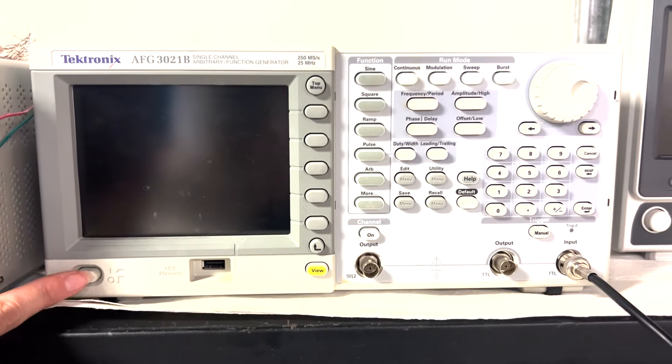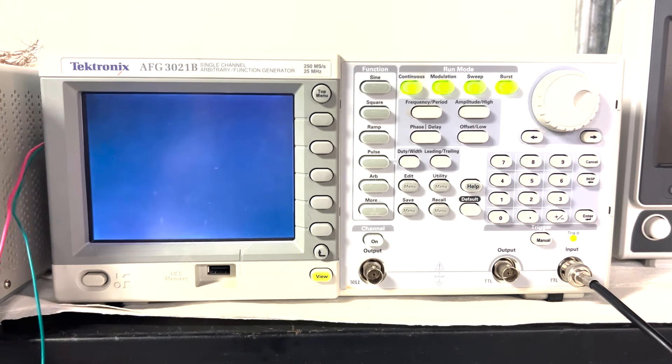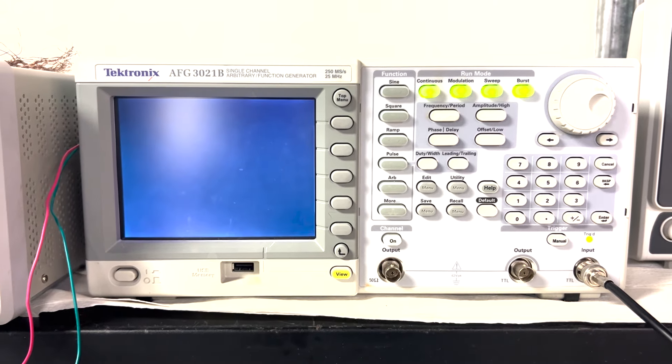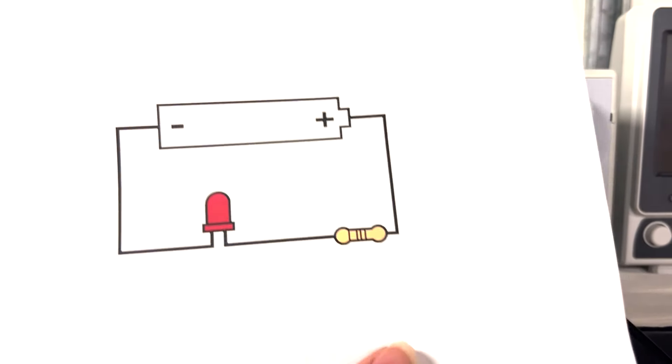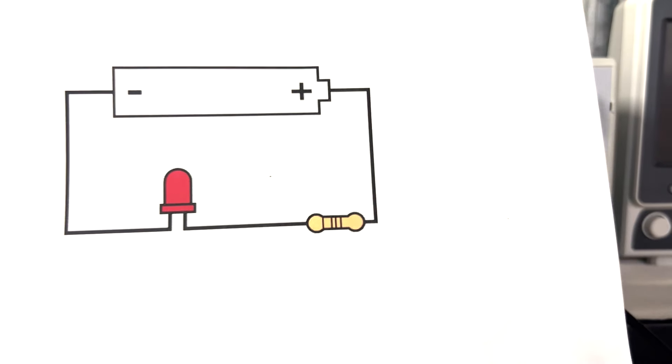You can turn on the function generator with this button. While it loads, I'll show you the circuit that we're going to be using today. It's a resistor LED circuit.